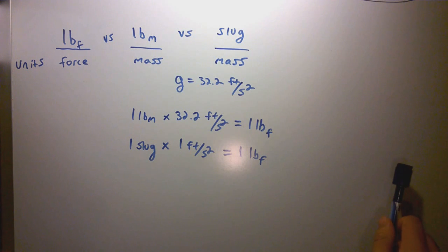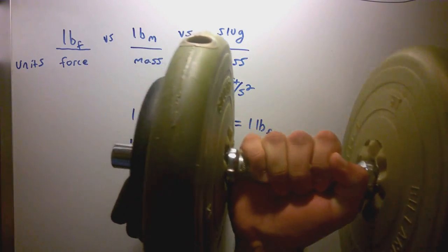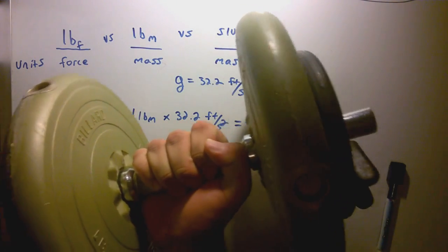Just a little visual thing to help you keep straight which one's a slug and which one's a pound mass. This is about one slug, roughly 32.2 pounds.